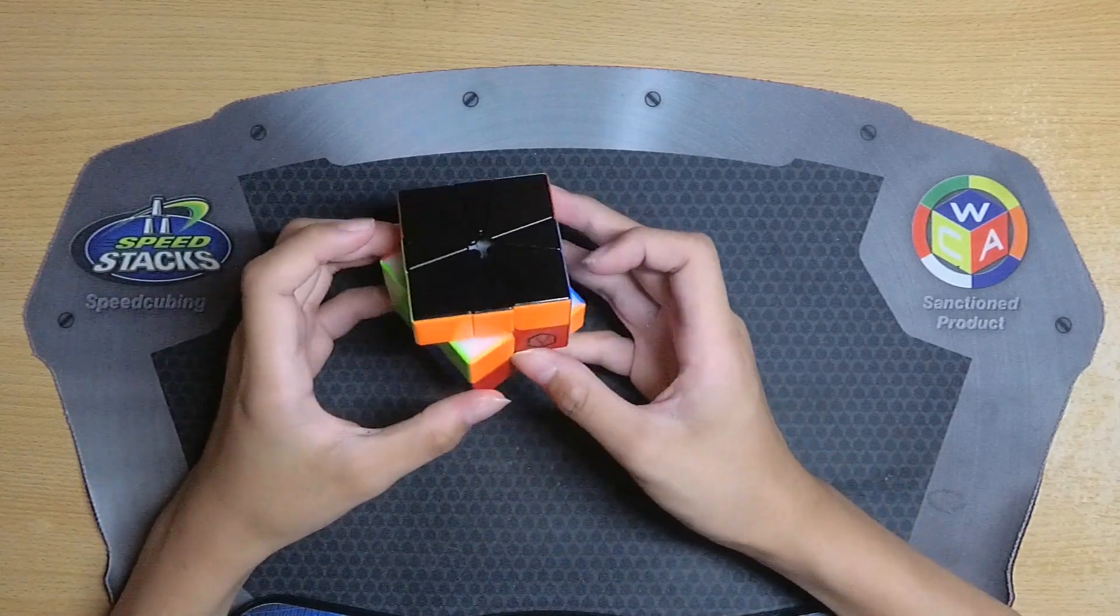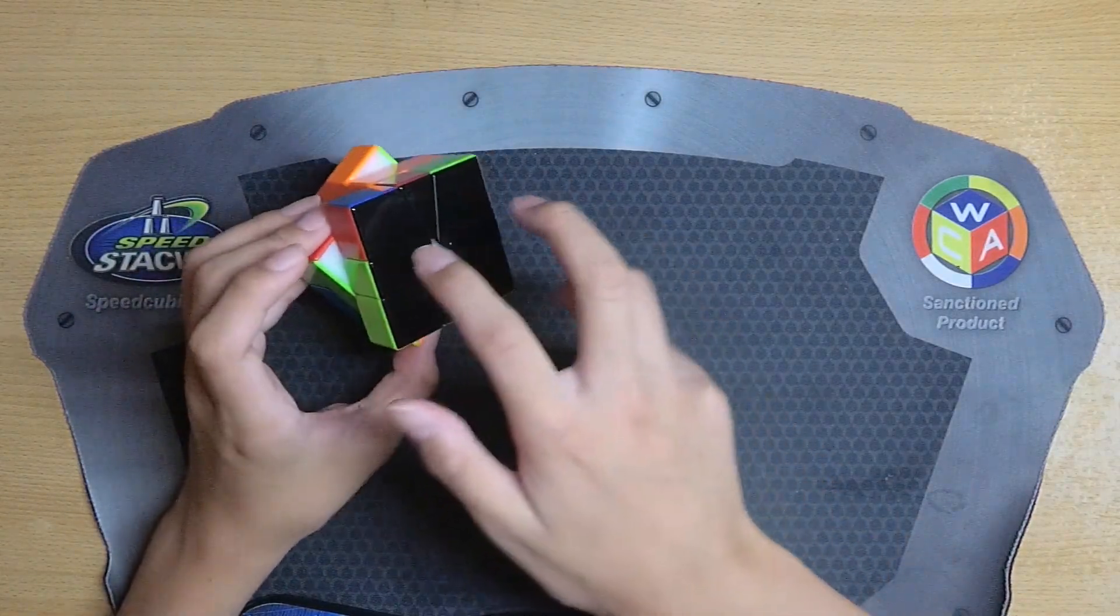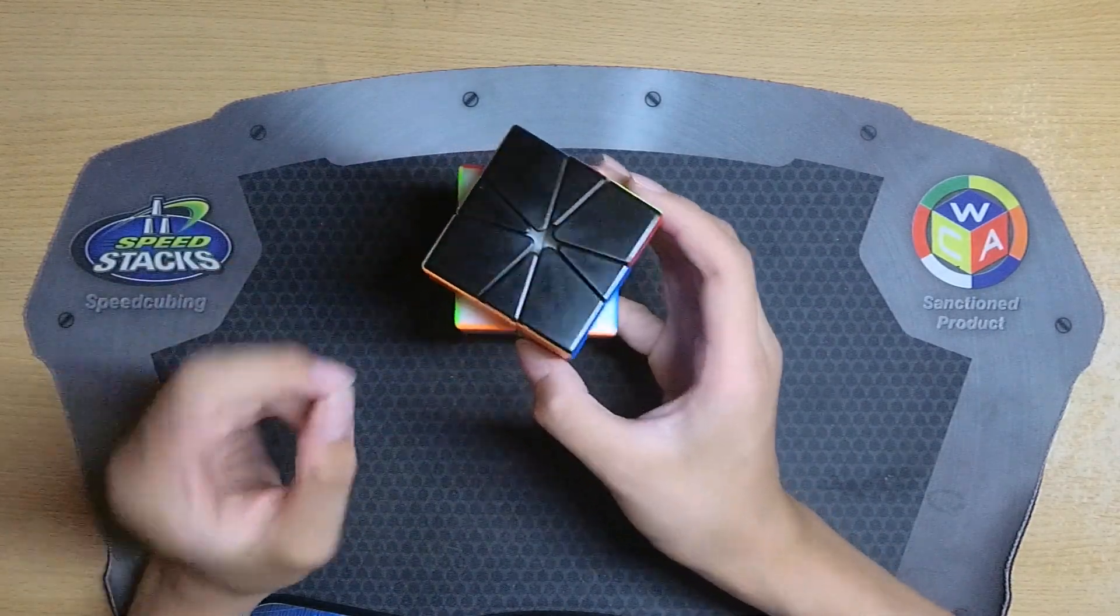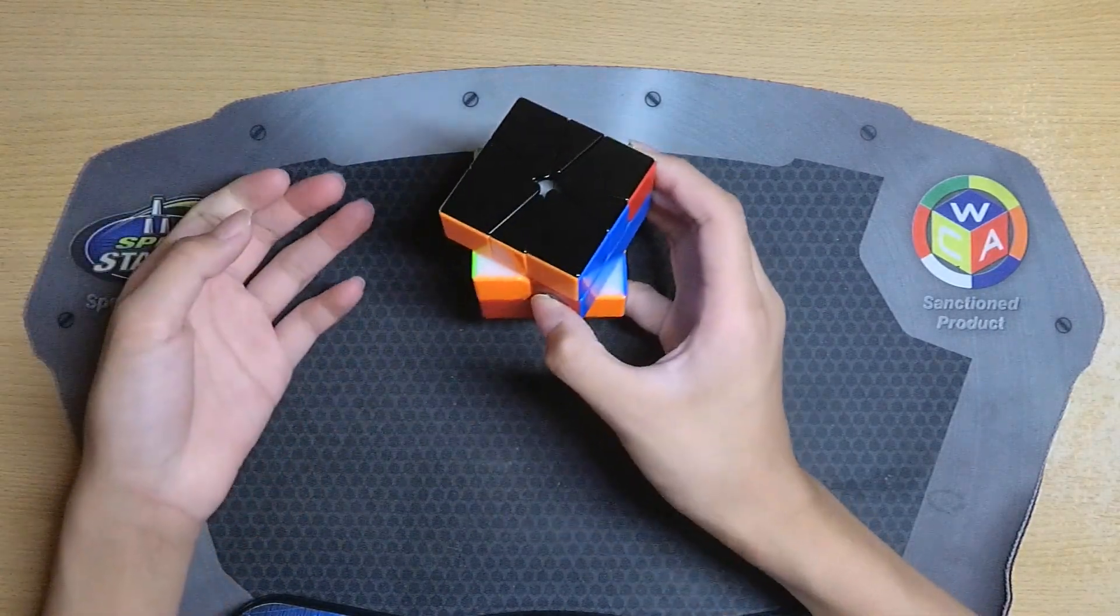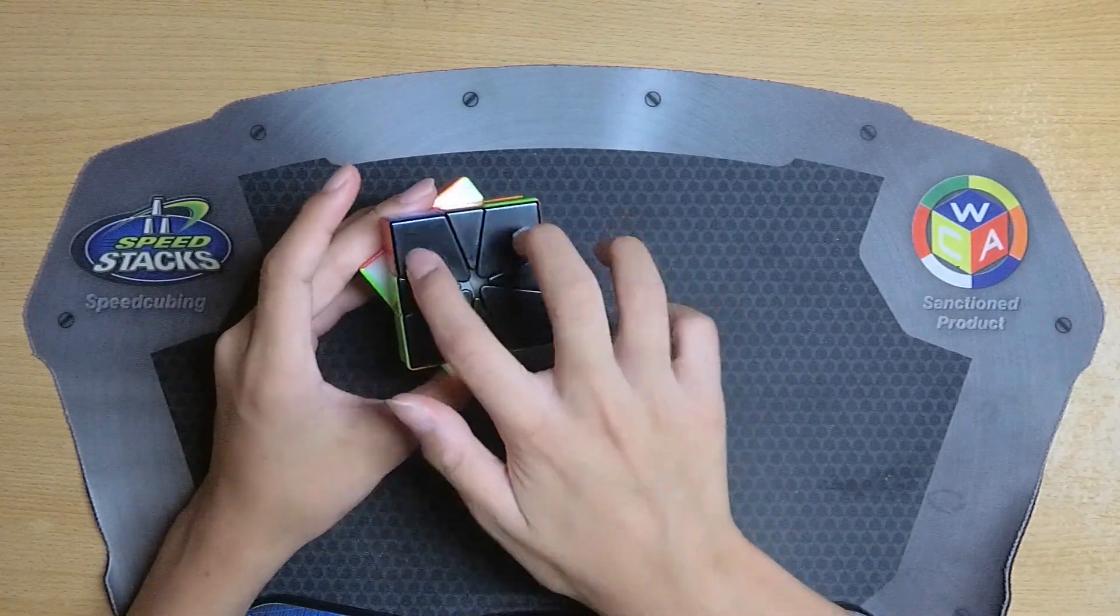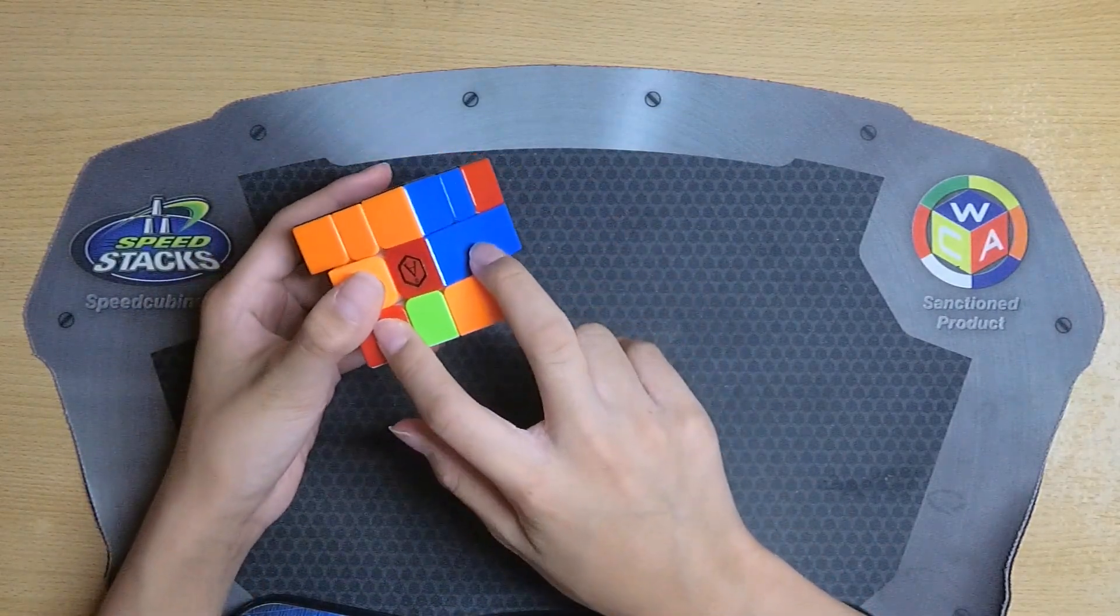From here I realized that I had PJ as just a pure two corner swap. Assuming that I did CSP correctly I shouldn't have parity on the solve, meaning that if I have parity on the top then I should have parity on the bottom as well.